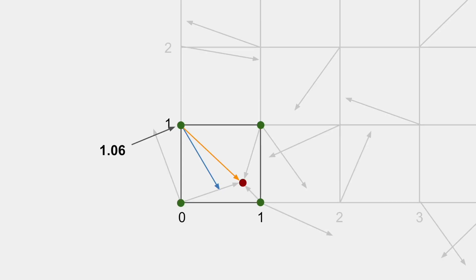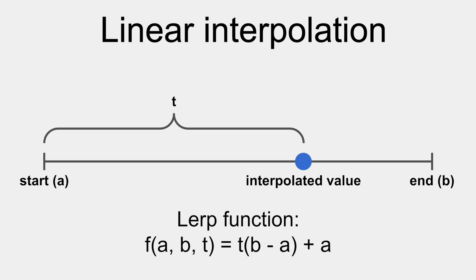The final step is to interpolate between these dot products to get a single value. You may have seen my video about my project, Drawing Morpher, in which I explain how to use linear interpolation to morph two drawings. Here, I'll briefly explain linear interpolation.